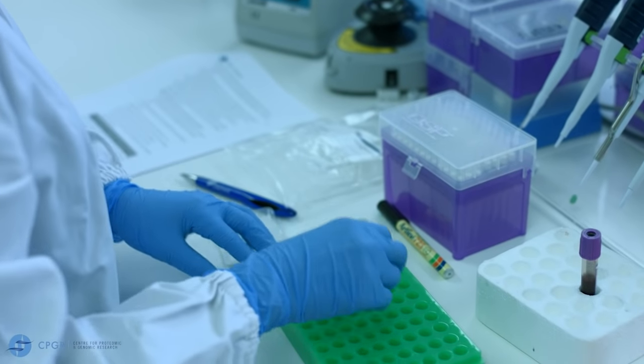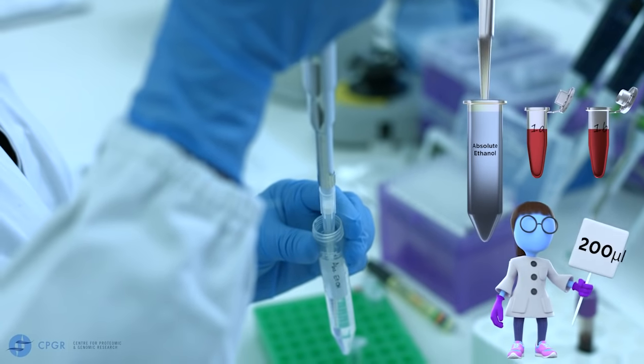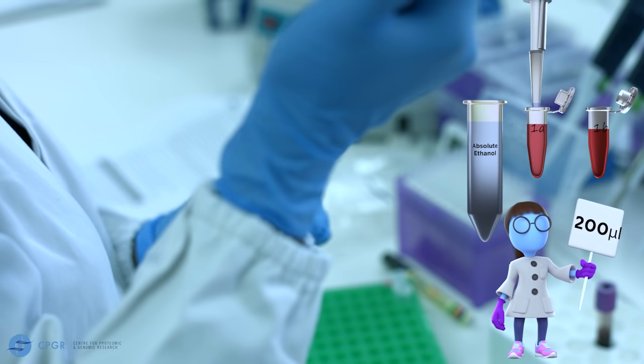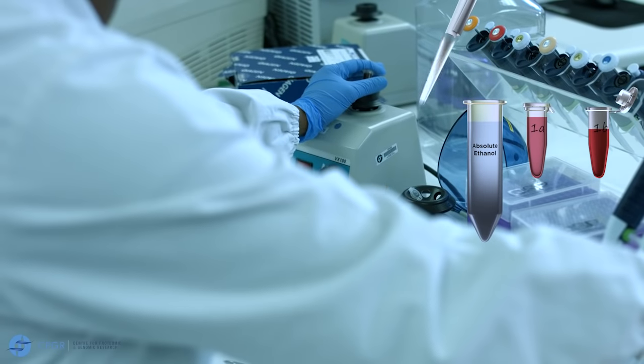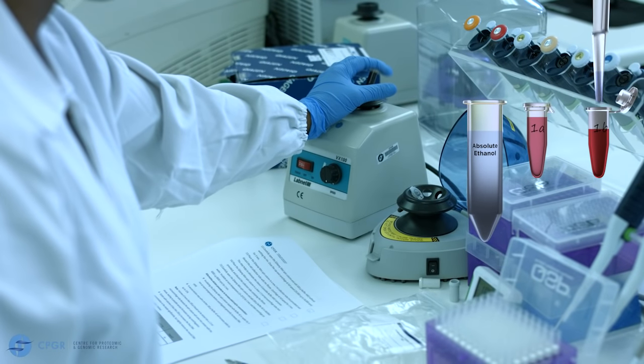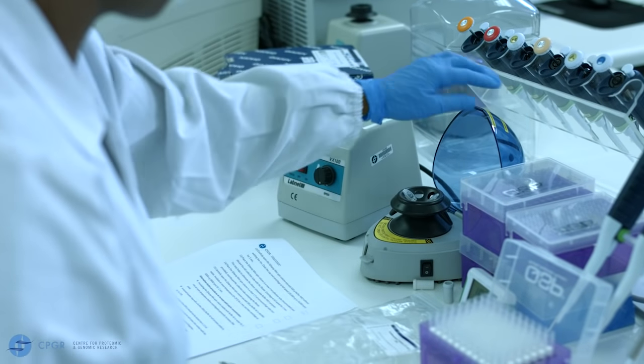Add 200 microliters of absolute ethanol to each microtube and mix each sample by briefly pulse vortexing for about 15 seconds. Briefly centrifuge the microtubes.